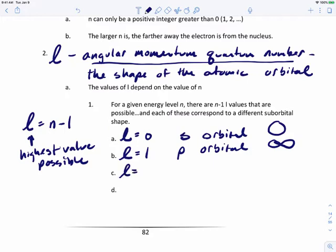Now if n is equal to three, the highest value L could be is two, and that describes the D orbital. And then if n is equal to four, the highest value L could be is three, and that describes the F orbital.